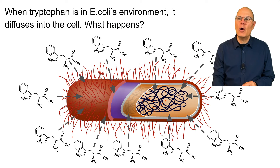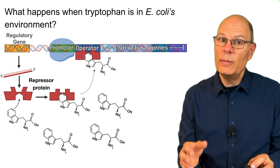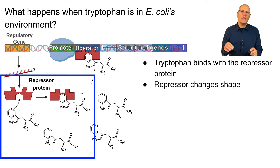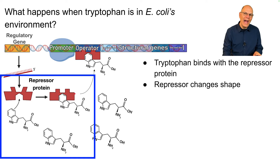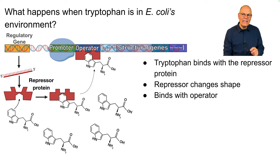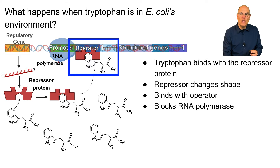When tryptophan is in E. coli's environment, that tryptophan — the amino acid — will diffuse into the cell. It will bind with the repressor protein, causing it to change shape, like an enzyme doing an allosteric shift. Binding on one side causes a change on the other side. This enables the repressor to bind with the operator, blocking RNA polymerase so it can no longer transcribe the structural genes to make enzymes that synthesize tryptophan.